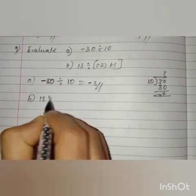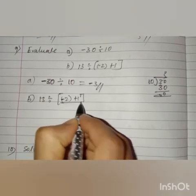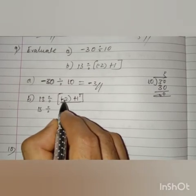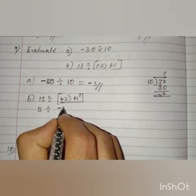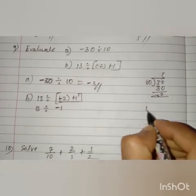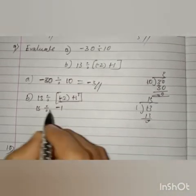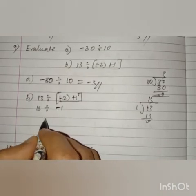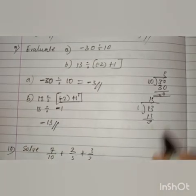Question number (b): 13 divided by (minus 2 plus 1). First, add the denominator terms: minus 2 plus 1 is minus 1. Now divide 13 by minus 1: 13 by 1 is 13. Since the divisor is negative, the answer will be negative. So the answer is minus 13.